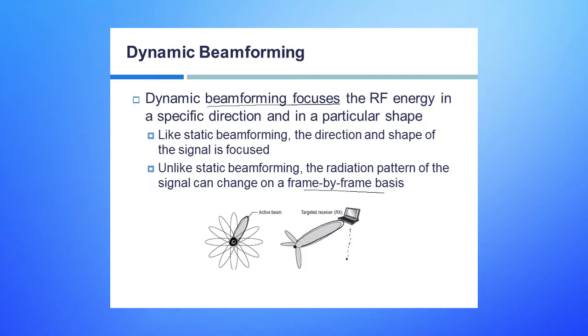If the receiver moves, then dynamic beamforming will use another lobe to reach that user as they're moving. They do that change on a frame-by-frame basis.